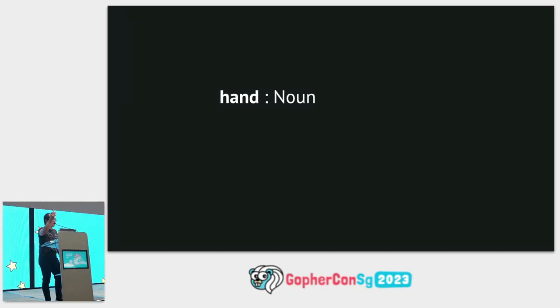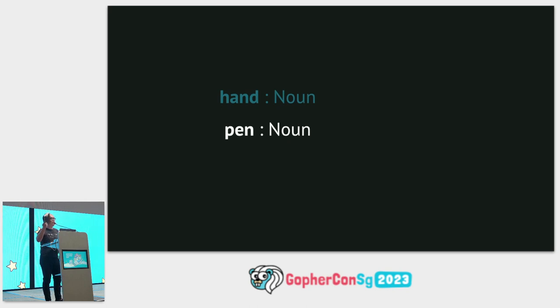This is a pen. A pen is a noun. This is my book. A book is a noun.